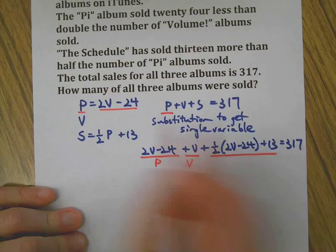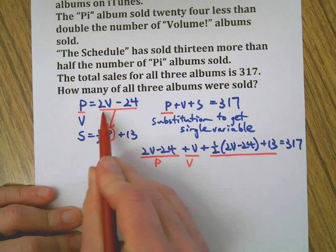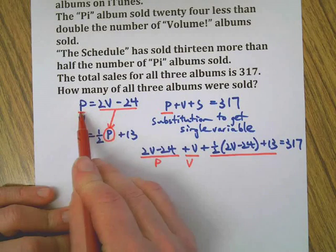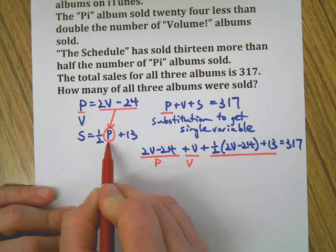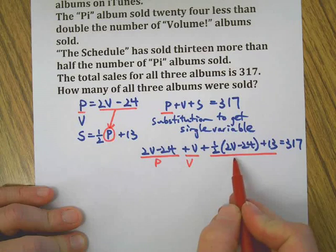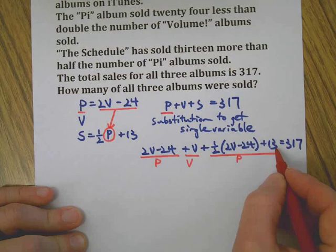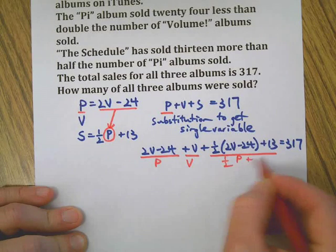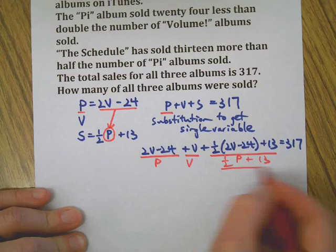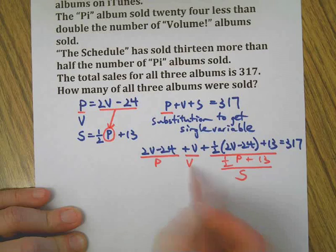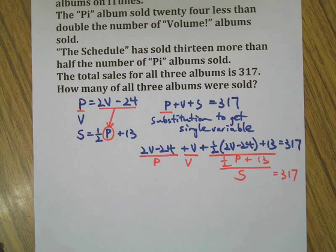Which brings us to this mess right here. Since we know that Pi album is 2V - 24, because this told us so, wherever I see a P, I can put 2V - 24 in there, which is exactly what I did here. This is 1/2 P + 13, right? Do you see that? 1/2 P + 13 is exactly what S equals. So what we have here is Pi, Volume, and Schedule equals 317. It just looks complicated, but it's really not. Trust me.